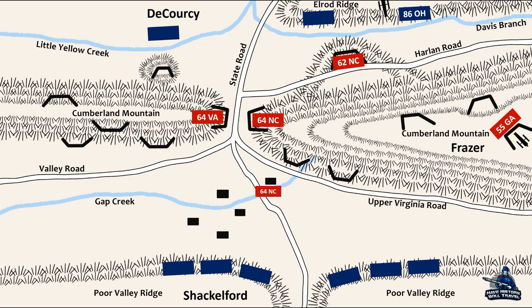Burnside became concerned about the Gap's capture and dispatched another brigade under Colonel Samuel Gilbert to the Gap, accompanied by Burnside himself, though this force would take a couple of days to arrive. In the meantime, de Corsi established communications with Shackelford on the south side of the Gap and attempted to fool Frazier into surrendering. Over a distant ridge, de Corsi marched a section of his brigade. The troops would descend into the valley and then secretly maneuver behind that ridge over which they had marched, then re-cross it.